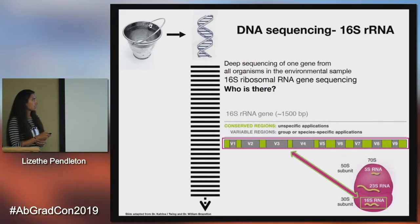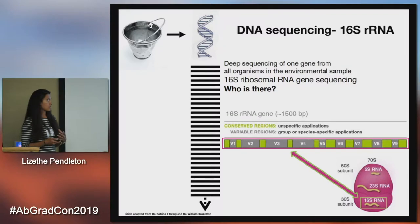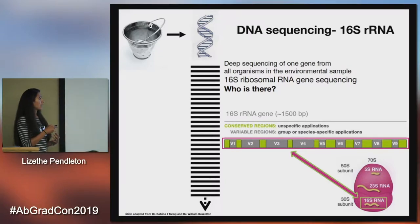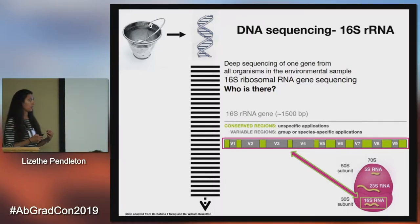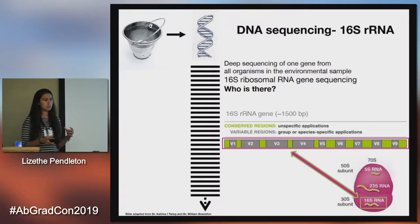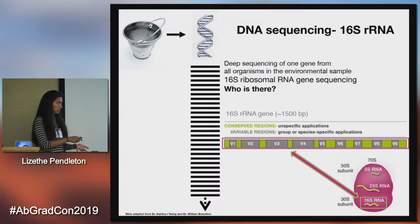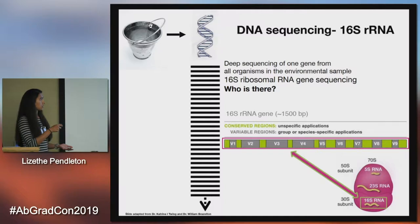16S rRNA sequencing is the sequencing of the 16S ribosomal RNA gene. This is also known as deep sequencing, and it gives us a very accurate profile — it's almost like the passport or the license of the microbes living there. It tells us who is in an environment.